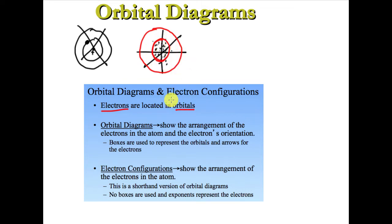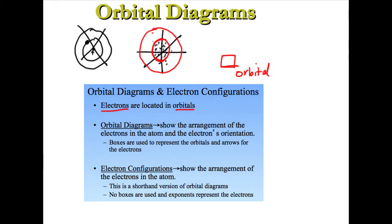An orbital diagram is a series of boxes that we use to represent the orbital, because the actual shapes get way too abstract. So we say our boxes are the orbitals, and each box is going to be able to hold electrons. Each electron is going to be represented by an arrow — these little half arrows equal electrons. The box represents the orbital.